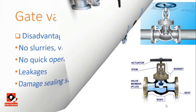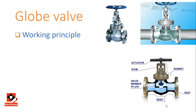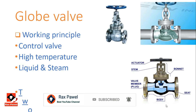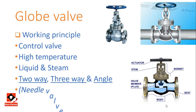Globe valve working principles: its stem is connected to a plug or disc which is moved perpendicular to the seat. The globe valve is common for throttling purposes and controlling high temperature applications, but can also be used as a shut-off valve. It is used for both liquids and gases. There are three types: two-way, three-way, and angle globe valves. The needle valve works on the same principle but uses a needle instead of a globe.